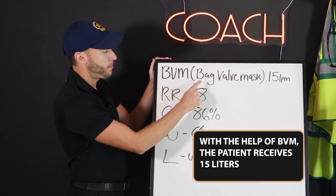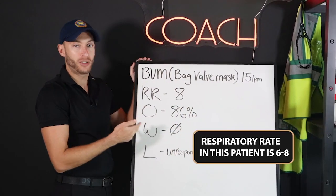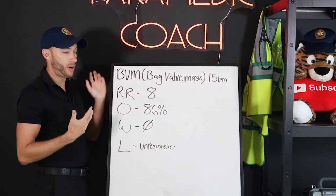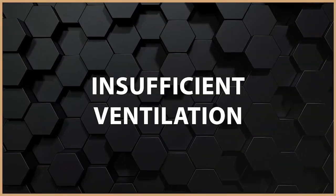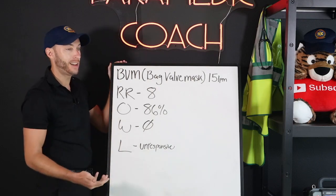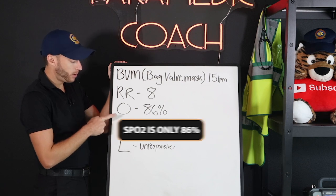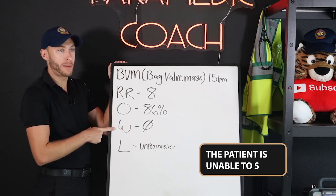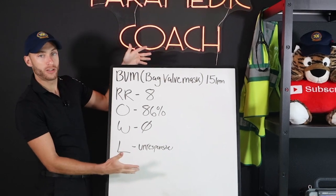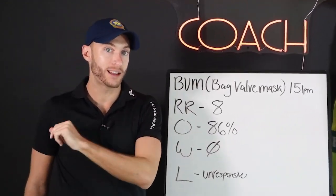Now, look at this. BVM — bag valve mask — about 15 liters per minute. So respiratory rate in this patient, let's say, is six, eight — low side. They're unable to get enough ventilations to sustain their life. They need assisting with their ventilations, getting air in and out. This is going to be low SpO2. They're not going to be able to speak because they can't manage their own airway, and they're going to be unresponsive. So would we say this patient that needs BVM is in respiratory failure? Yes, we would say that.